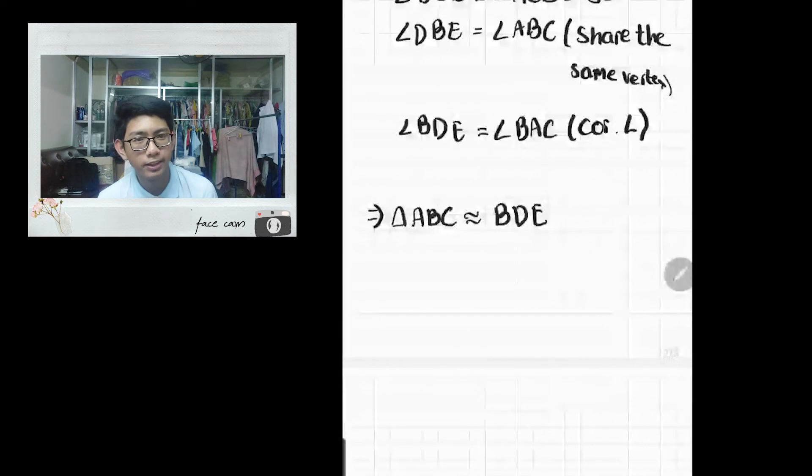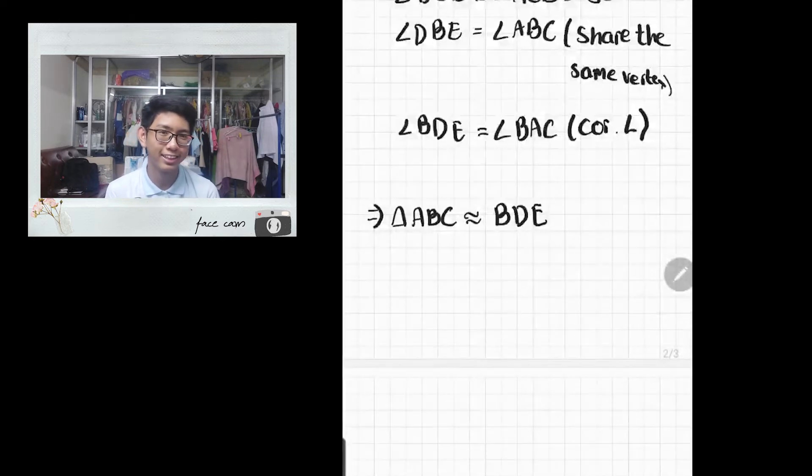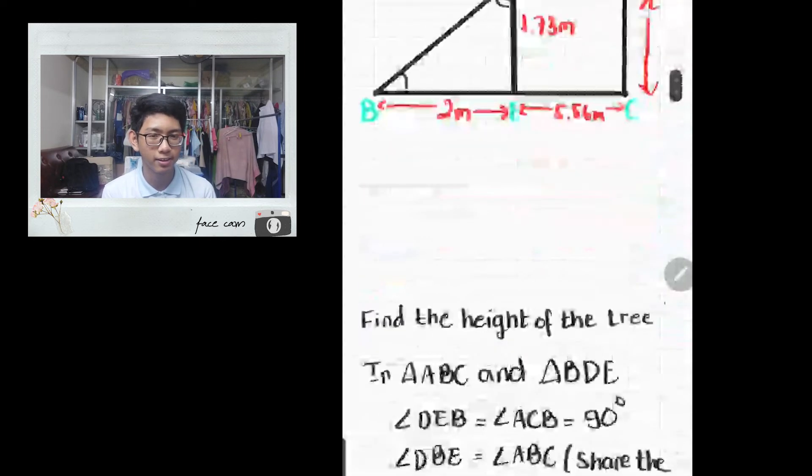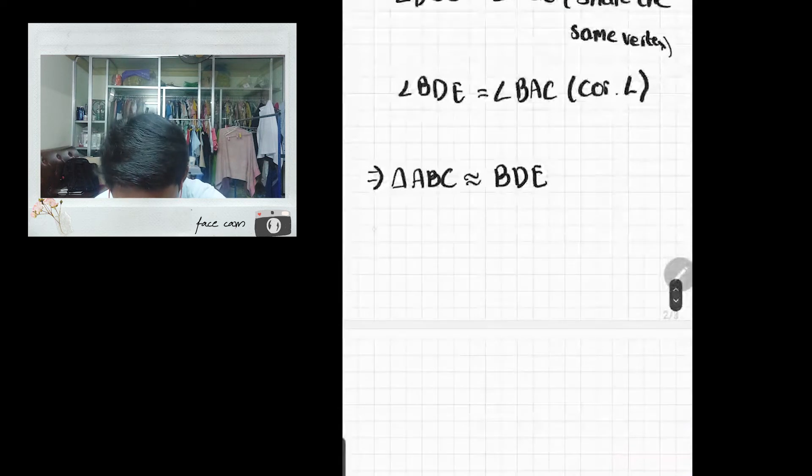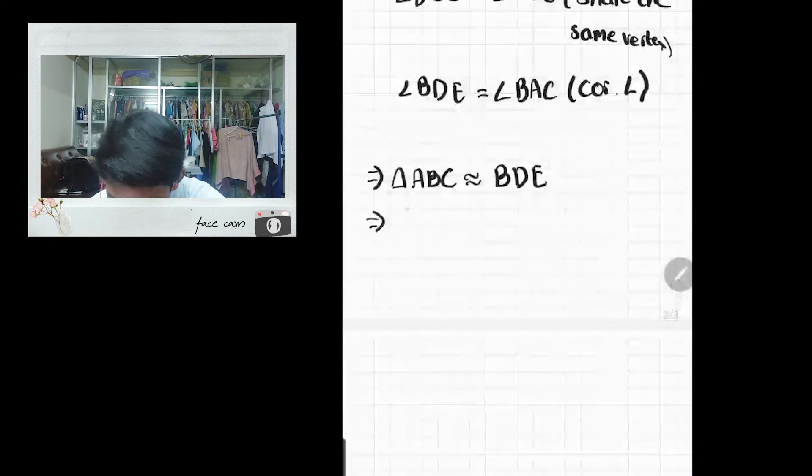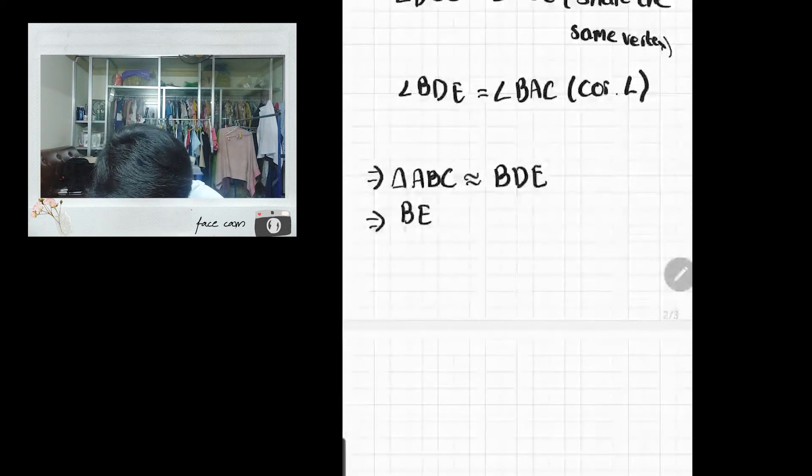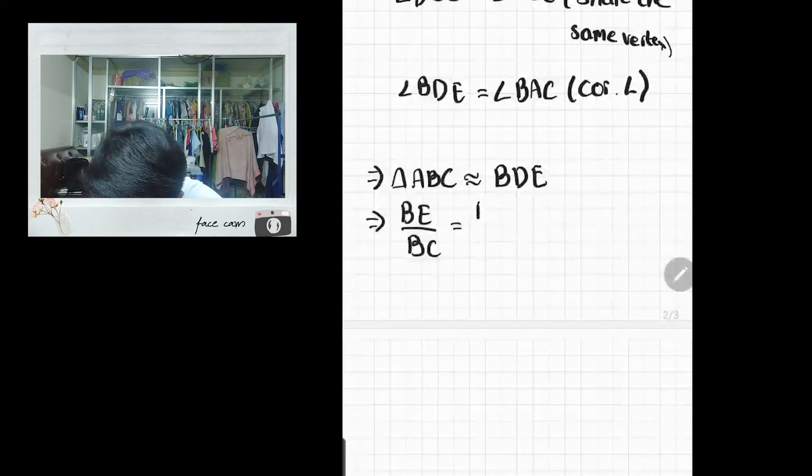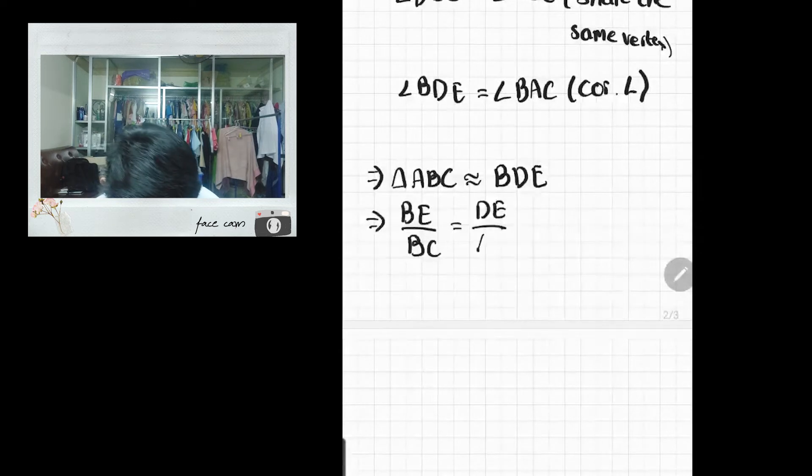As we know, similar triangles have their corresponding sides proportionate to one another. So we can say that BE over BC is equal to DE over AC, which equals BD over AB.